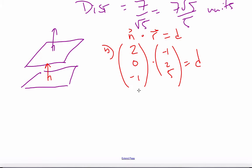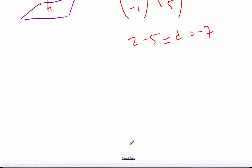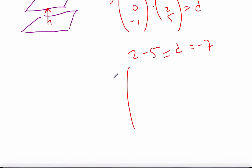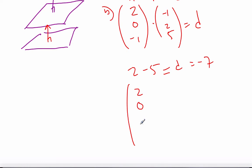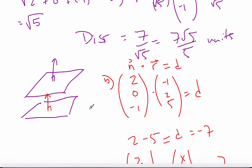And I end up with negative 2 plus 0 minus 5 is d, which is negative 7. And so my equation will be 2, 0, negative 1, dot x, y, z, is equal to negative 7. This is parallel to the first plane, and through the point negative 1, 2, 5. That's plane 2.